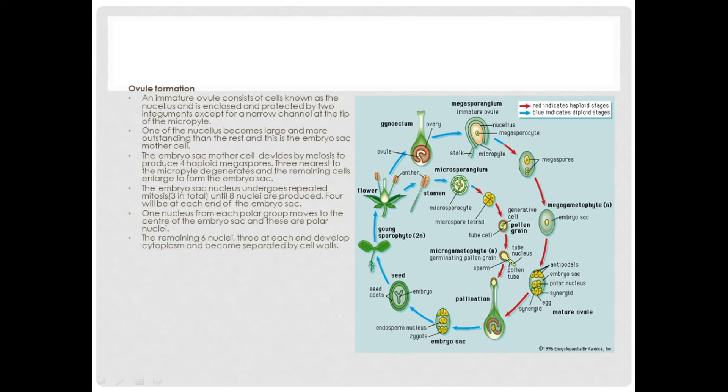The remaining six, three at each end, develop cytoplasm and become separated by cell walls.